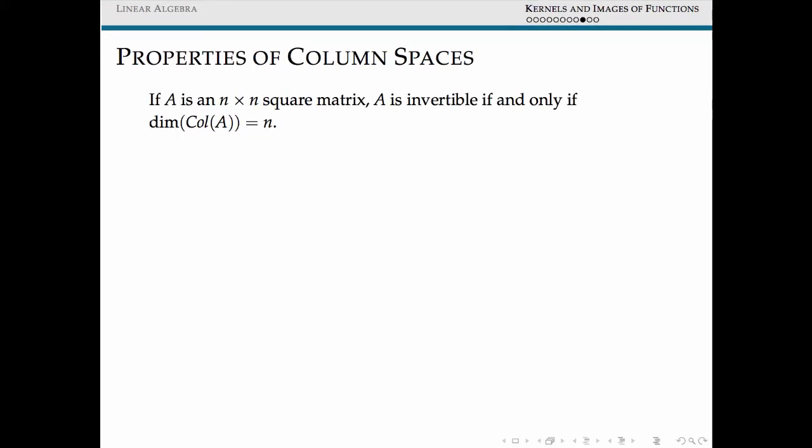In the same way that we can identify whether or not a matrix A was invertible by examining, so going back to that earlier example, if A was an n by n square matrix, the null space of A was equal to just the vector 0 if and only if A inverse exists. So this was our previous theorem.